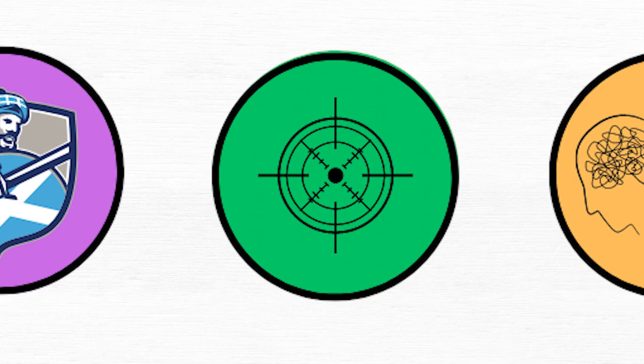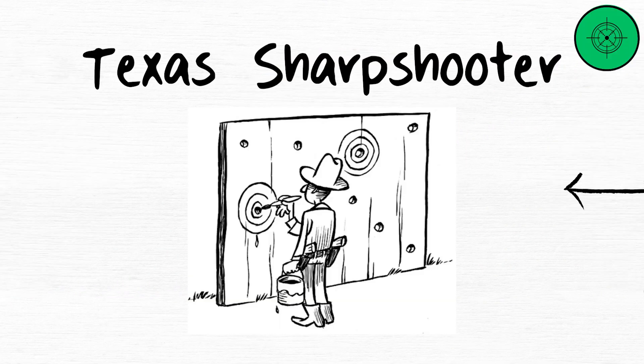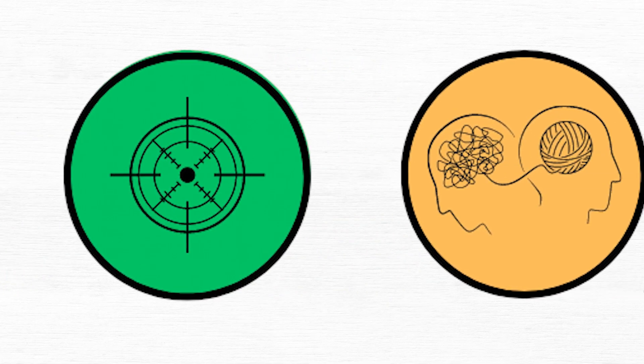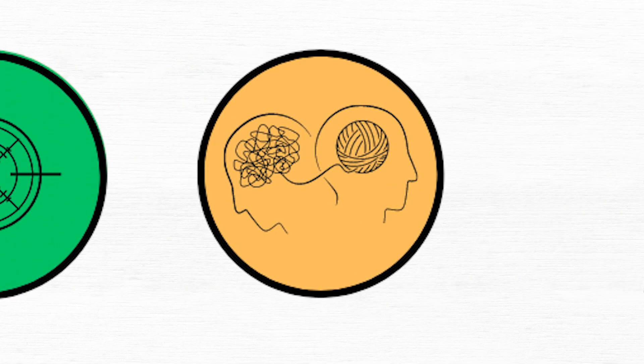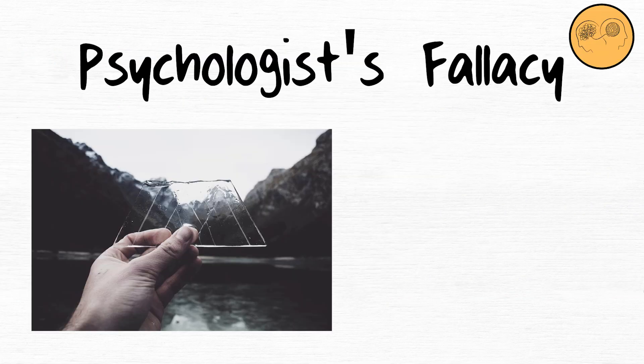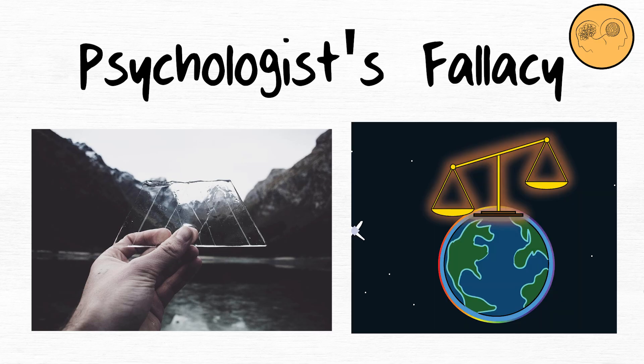Texas sharpshooter. The Texas sharpshooter fallacy cherry-picks data to fit a conclusion. Psychologist fallacy. The psychologist fallacy assumes personal experience reflects the true nature of an event.